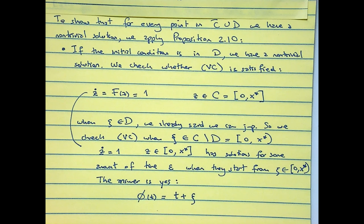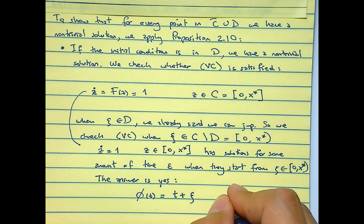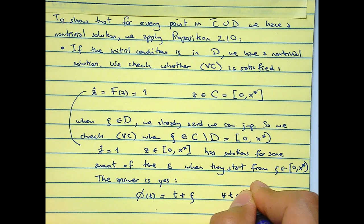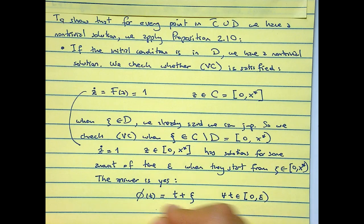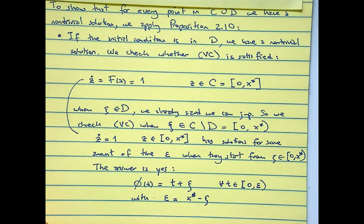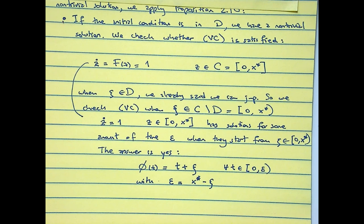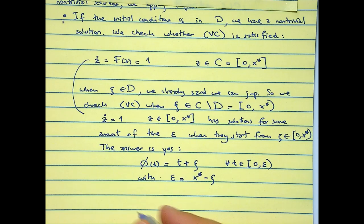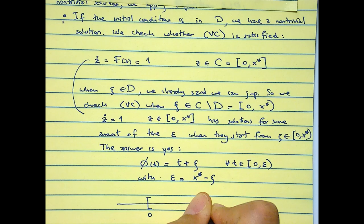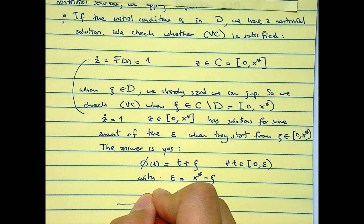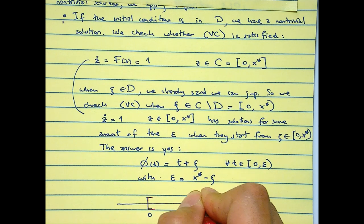The best way to answer that is to say, pick phi to be t plus the initial condition, and define this for all T in 0 to epsilon with epsilon equal to X star minus C.